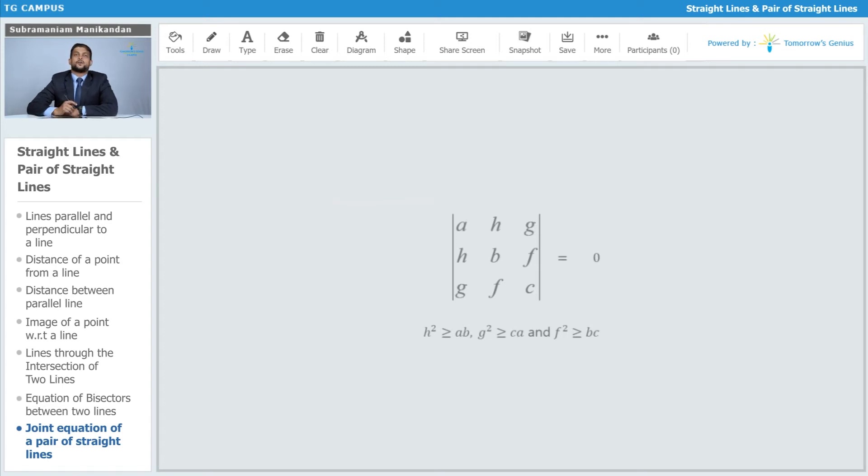The determinant formed by a, h, g, h, b, f, g, f, c equals 0, along with the condition that h² should be greater than ab, g² is greater than ac, and f² greater than bc.